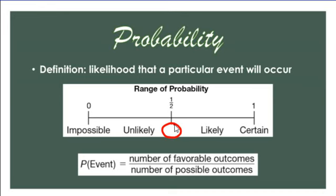You could also use numbers from zero all the way to one. Everything in between is going to be a fraction. Impossible is zero, 50-50 is one half, and if it's certain it will happen, that's a one. You could also put it as a percent: 0% is impossible, 100% is certain, and 50% is half.